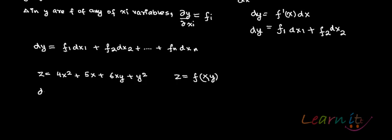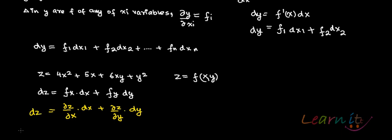So change in z could be found out by finding out f1 or in place of f1 let me write fx dx plus fy dy. How would you write fx? You can write fx as del z by del x into dx. How would you write fy? Del z by del y into dy. And the sum of these changes is given by dz.